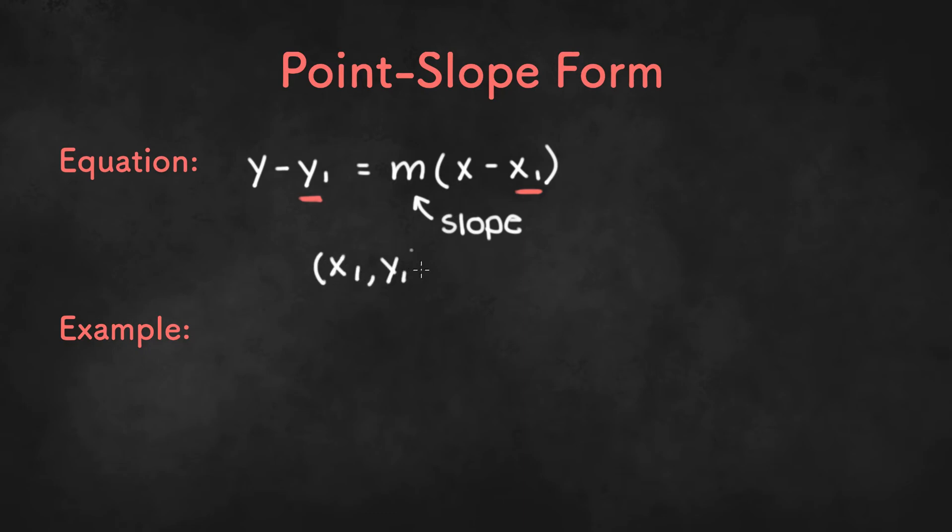Some examples of equations in point-slope form would be y plus 3 equals negative 5 times the difference of x minus 7. In this equation, negative 5 would be the slope.